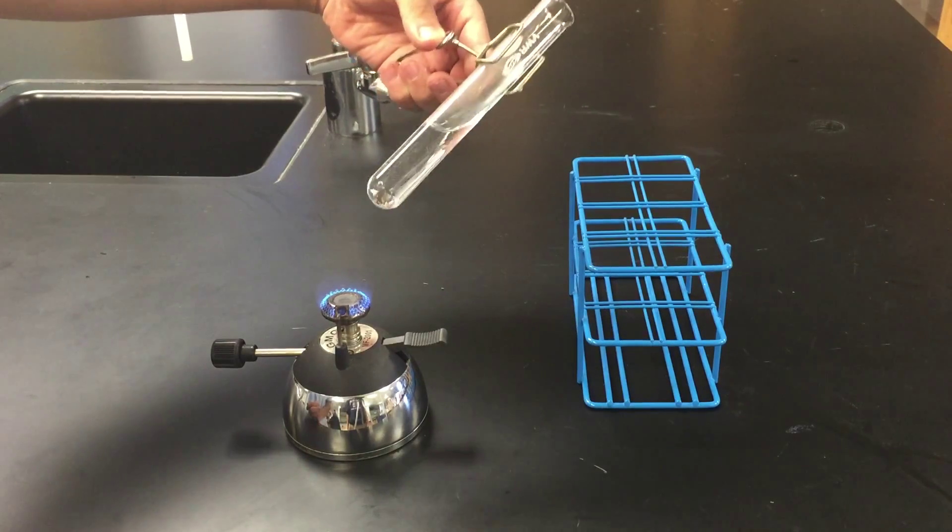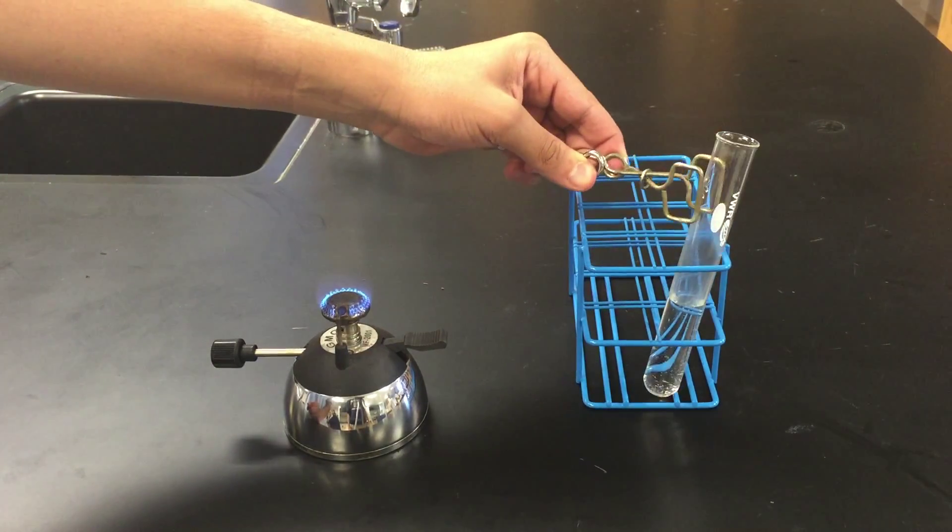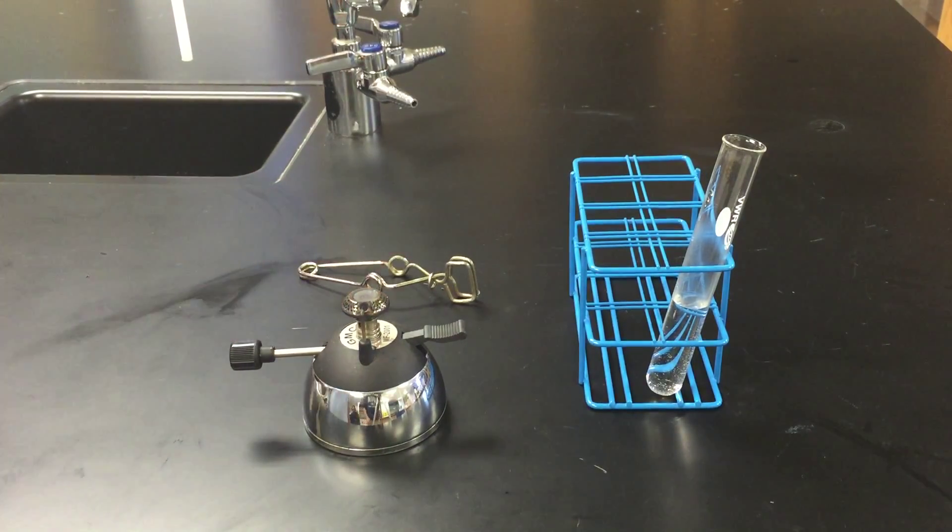Never heat a stoppered test tube. Also, don't immediately cool hot glassware as it could shatter. Turn off the butane burner and put the test tube back in the rack.